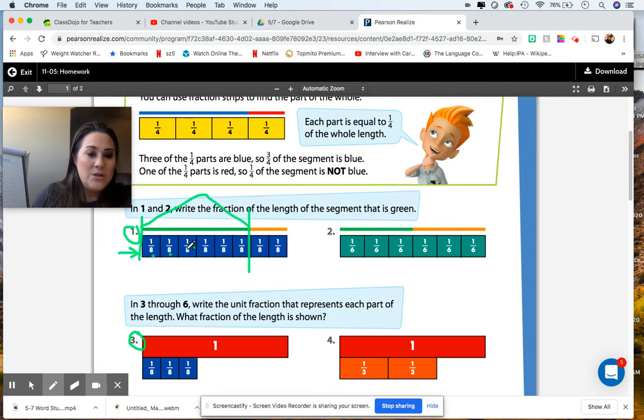We've got one, two, three, four, five, and six. So what is our fraction of the length of the segment that is green?